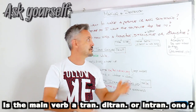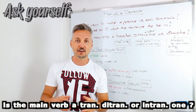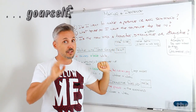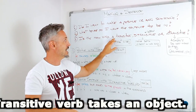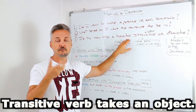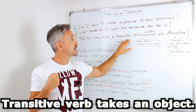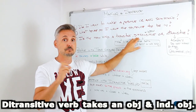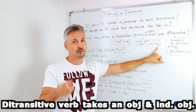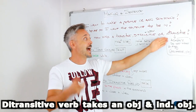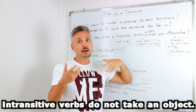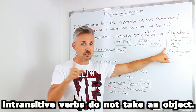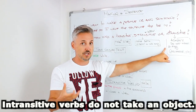There is a lesson for these three types of verbs, but I will tell you what they mean. Transitive is a verb that takes an object. Detransitive is a verb that takes both an object and an indirect object. An intransitive verb — they are action verbs and do not take direct objects.